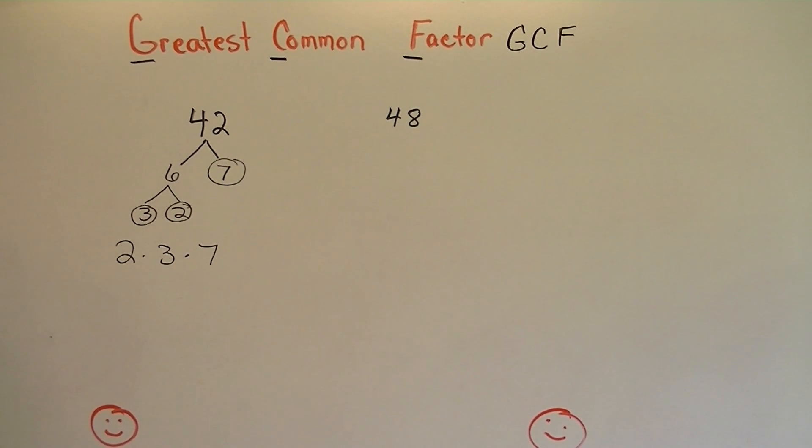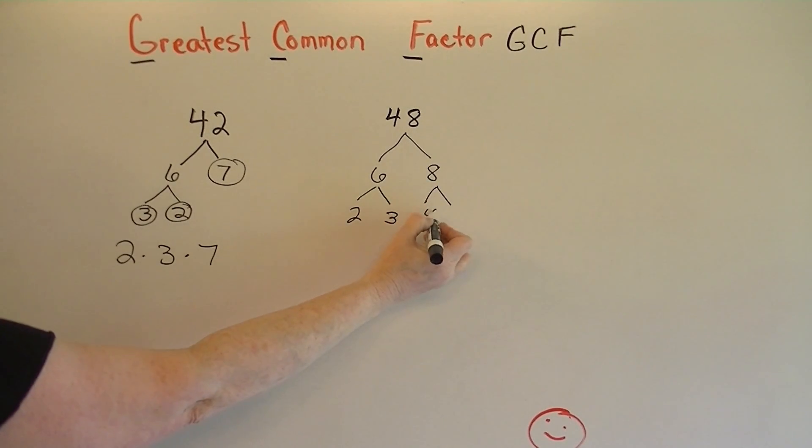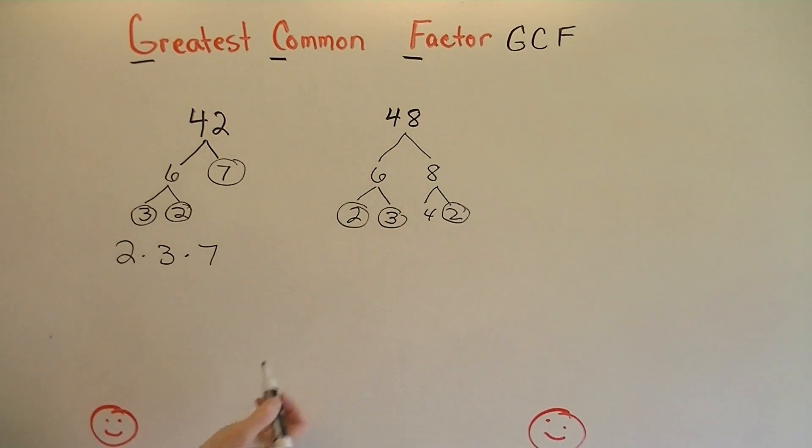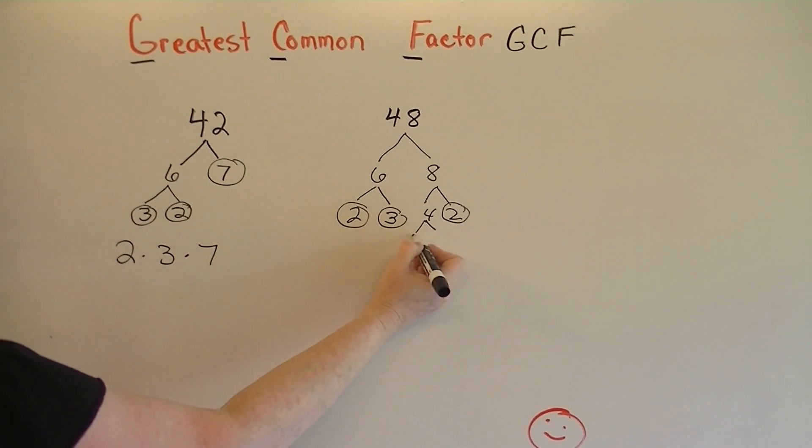And now we're going to factor 48. I think of 6 times 8. And then 6 is composite, so we're going to factor it into its prime, which is 2 times 3. And 8 is composite, and that would be 4 times 2. 2 is prime, 3 is prime, 2 is prime.